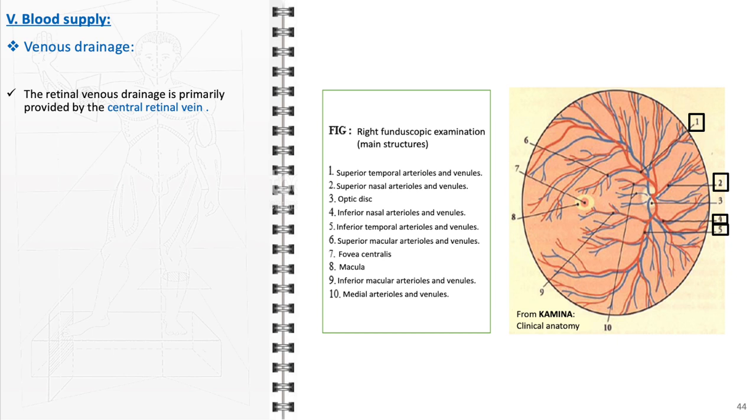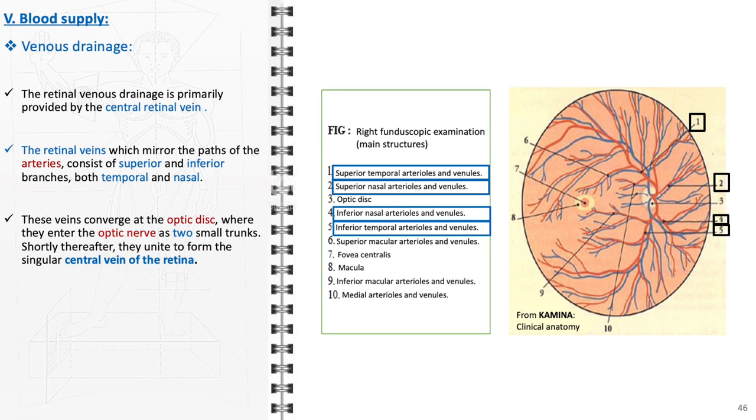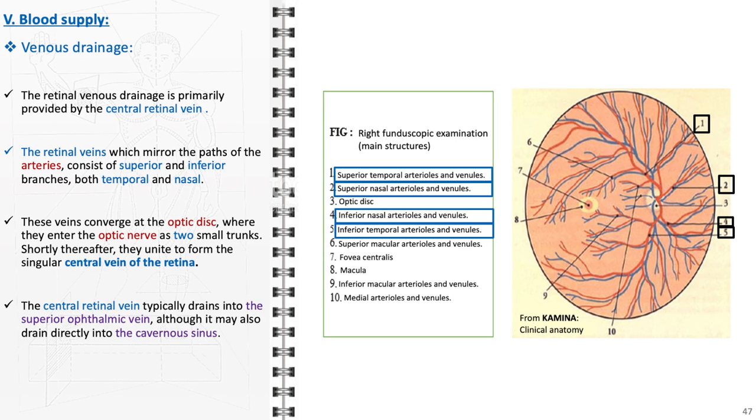The venous drainage of the retina is orchestrated by the central retinal vein and its branches. The retinal veins follow the course of the retinal arteries and are divided into superior and inferior sets with temporal and nasal branches. The retinal veins merge at the optic disc. It is here that the superior and inferior, nasal and temporal branches come together. After converging, the branches enter the optic nerve and shortly fuse to form the central retinal vein. The central retinal vein then typically exits the eye to drain into the superior ophthalmic vein. From there, it can either connect to the cavernous sinus directly or through the superior ophthalmic vein.